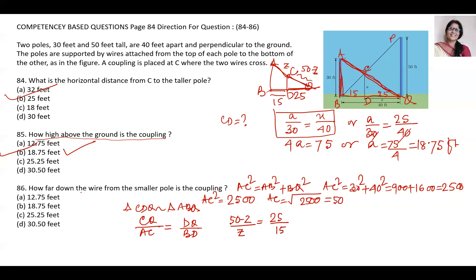On cross multiplication, 15 times 50 minus z equals 25z, or 750 minus 15z equals 25z. So 40z equals 750, or z equals 75 by 4, that will be 18.75 feet.